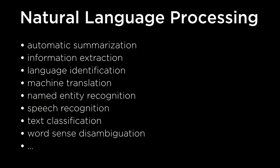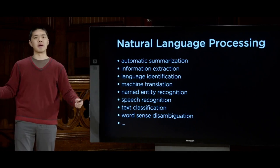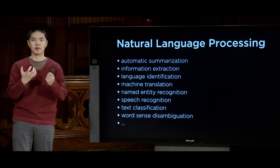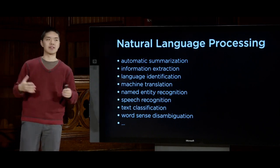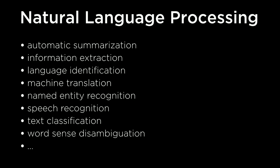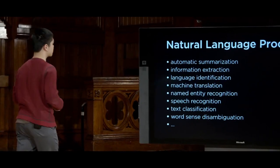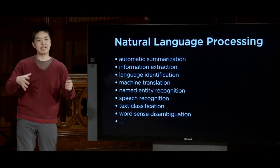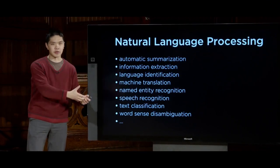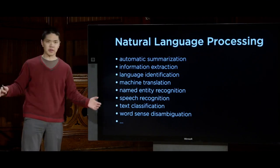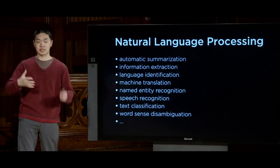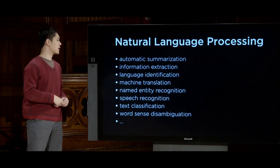Something like information extraction — given a corpus of documents or the internet, we'd like our AI to extract meaningful semantic information. Language identification: given a page, can you figure out what language that document is written in? This is something you might see in a web browser that asks if you'd like to translate a page. That language identification process is then related to machine translation — taking text in one language and translating it into another, which has seen a lot of research and keeps getting better.